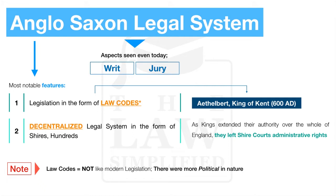To begin with, one of the most notable features of the Anglo-Saxon legal system, particularly prior to the Norman Conquest of 1066, is that the system at large was actually based on legislation derived through a form of law codes. These law codes were developed by the seminal Ethelbert, the King of Kent, way back in 600 A.D.